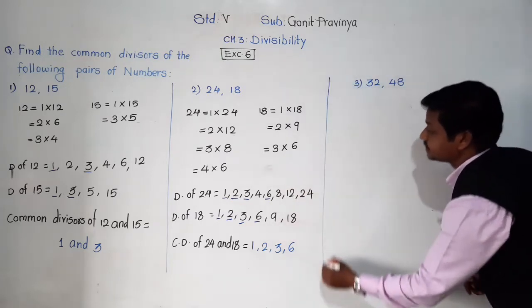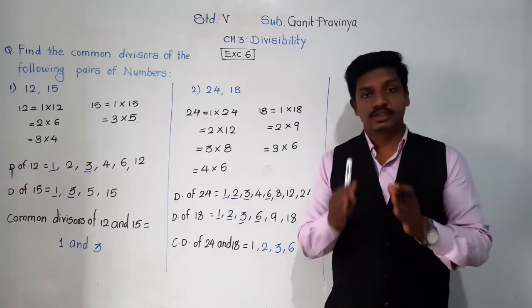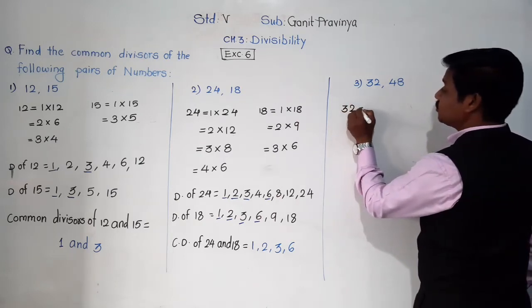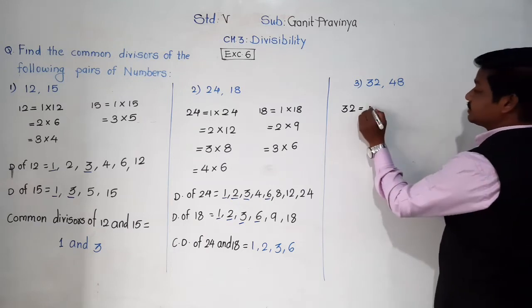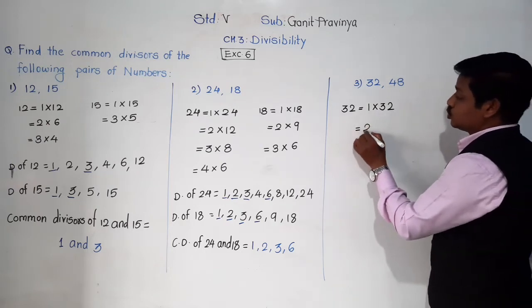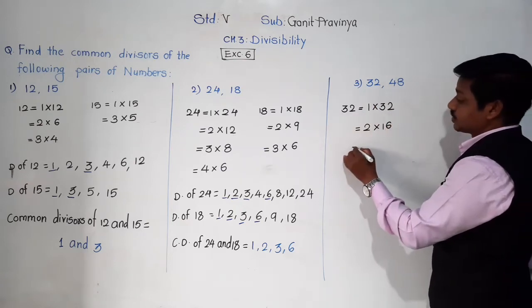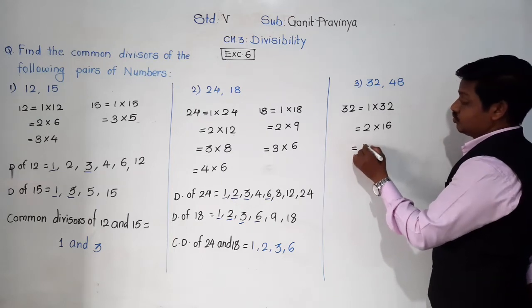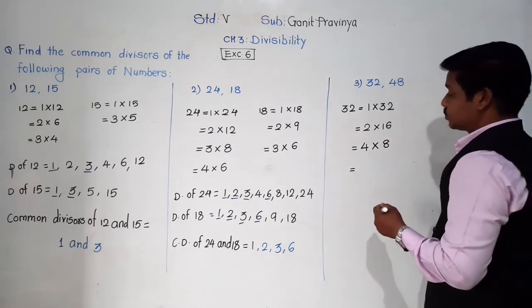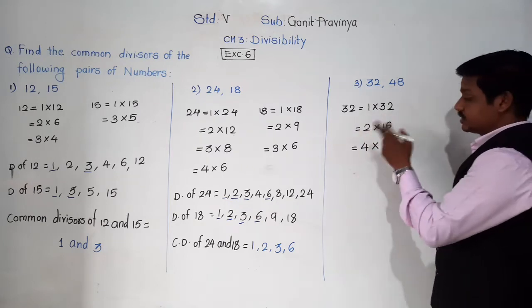One more example: 32 and 48. We have to find common divisors of 32 and 48. First, find all divisors of both numbers. For 32: 1 × 32, then 2 × 16 equals 32, then 4 × 8 equals 32. It is not divisible by 3, 5, 6, or 7. So divisors of 32 are 1, 2, 4, 8, 16, and 32.